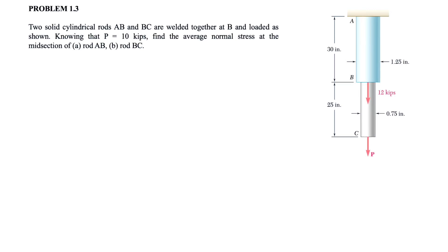All right guys, welcome back. We have another question from the first chapter of mechanics of materials, Beer and Johnston, and we have two solid cylindrical rods AB and BC that are welded together at point B and loaded as shown.